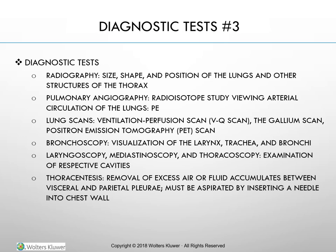Thoracentesis: A small amount of fluid lies between the visceral and parietal pleura. When excess fluid or air accumulates, the physician aspirates it by inserting a needle into the chest wall; this procedure, called thoracentesis, is performed with local anesthesia. It may also be used to obtain pleural fluid samples or biopsy specimens. Bloody fluid suggests trauma; purulent fluid indicates infection; serous fluid may be associated with cancer, inflammatory conditions, or heart failure. Up to 1–2 liters may be withdrawn for therapeutic relief.